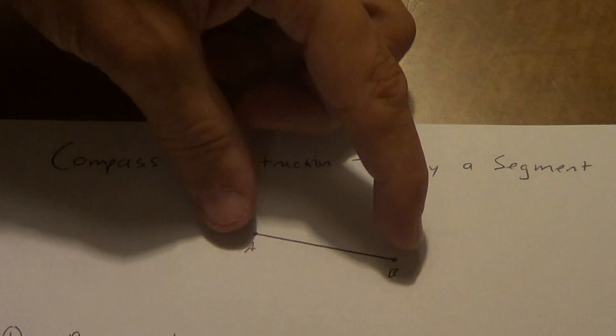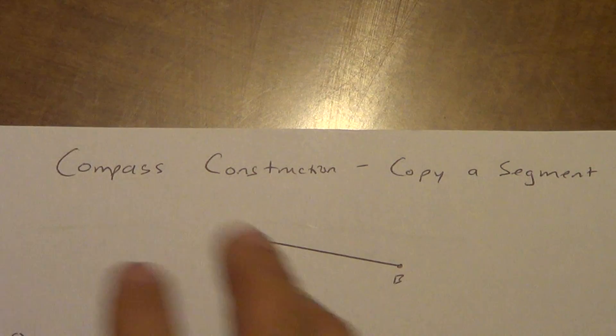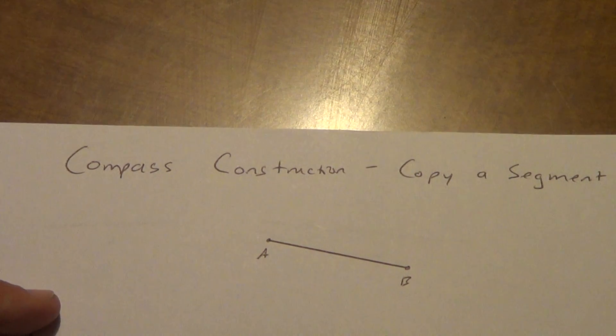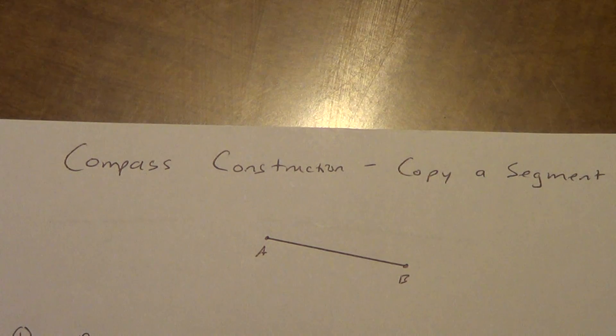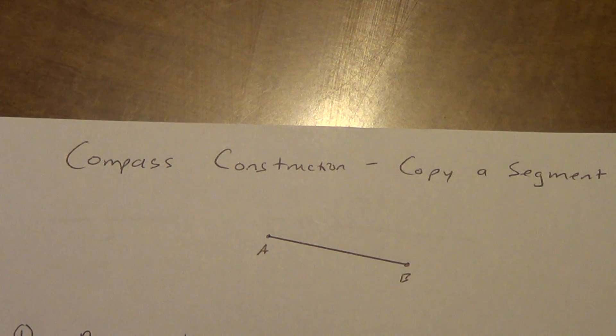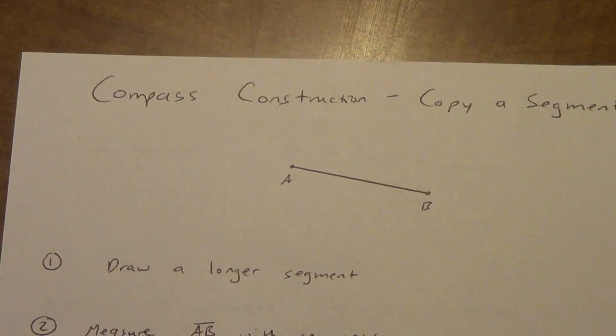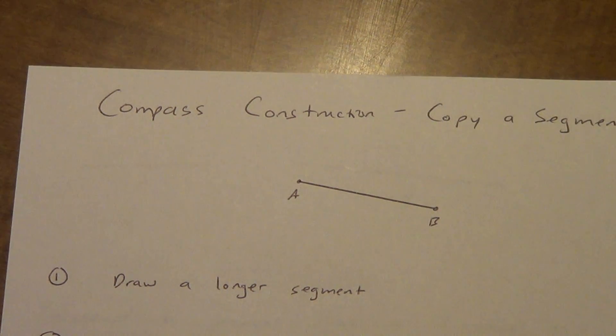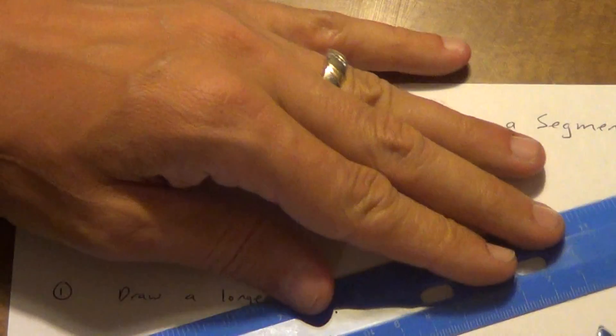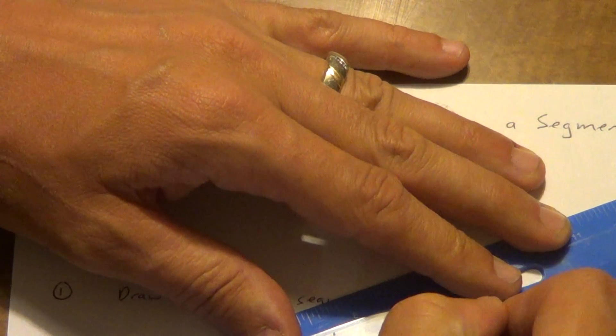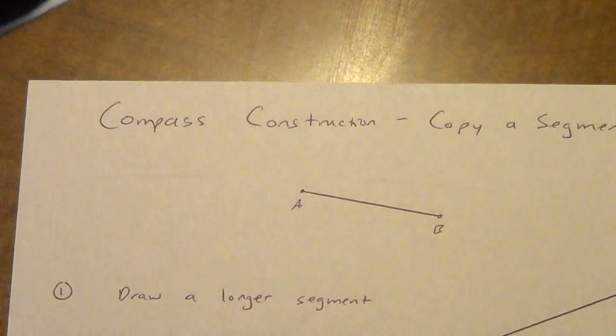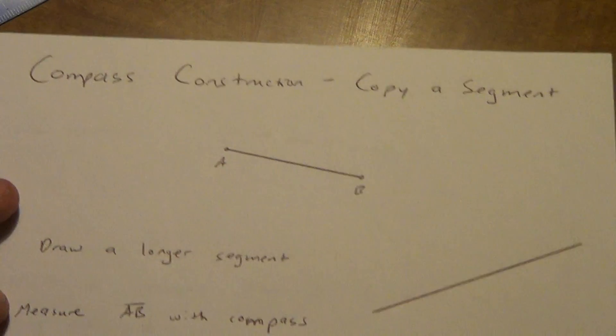Alright, here we go. So we're going to copy a segment. Basically I'm going to take this segment right here and I want another one just like it, so that they're congruent. We've got 4 steps to do this. First, draw a longer segment. I don't really know how long it is, it doesn't even have to go in the same direction. That's definitely longer than the first one.